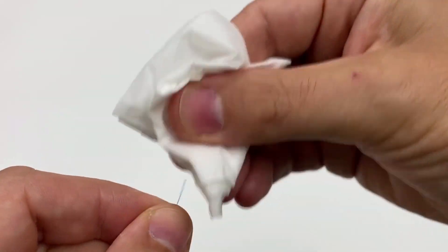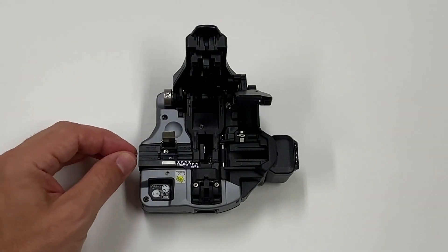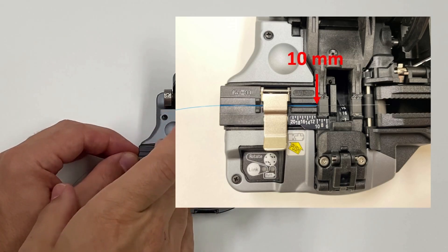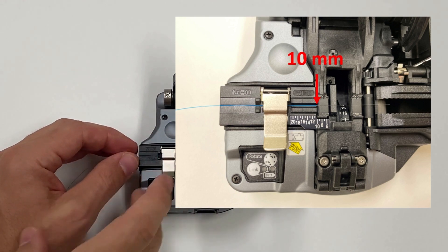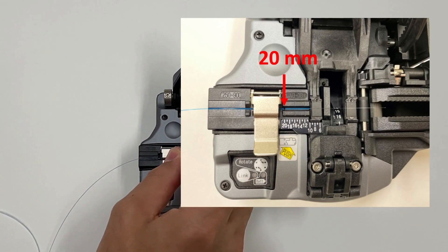Clean the fiber with a lint-free wipe and fiber preparation fluid. Place the fiber into the CT50 cleaver at the 10 millimeter length. Close the clamp and make a mark at the 20 millimeter length.